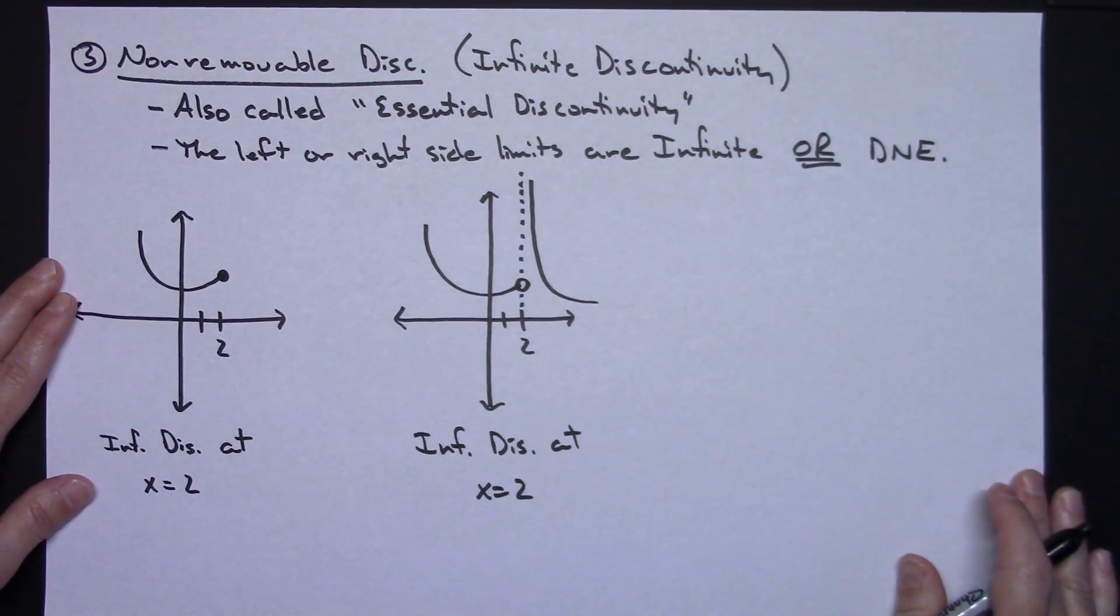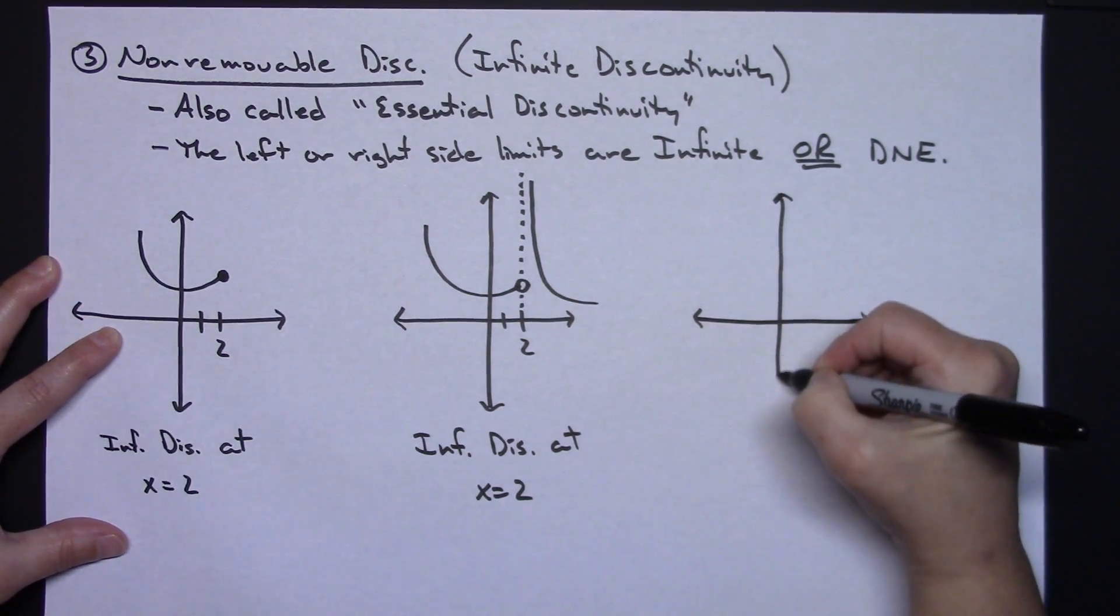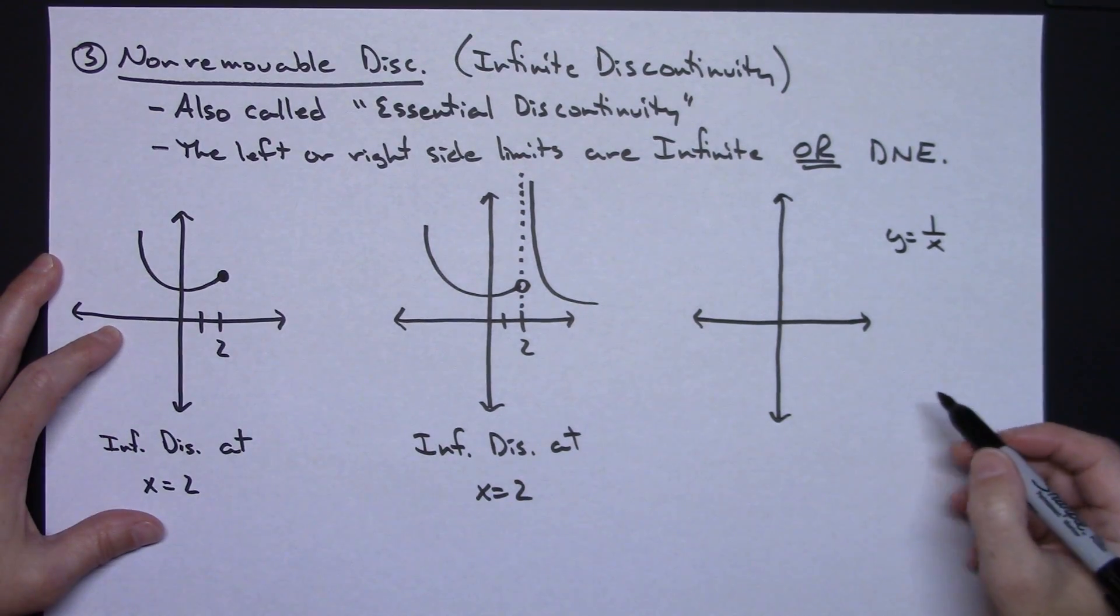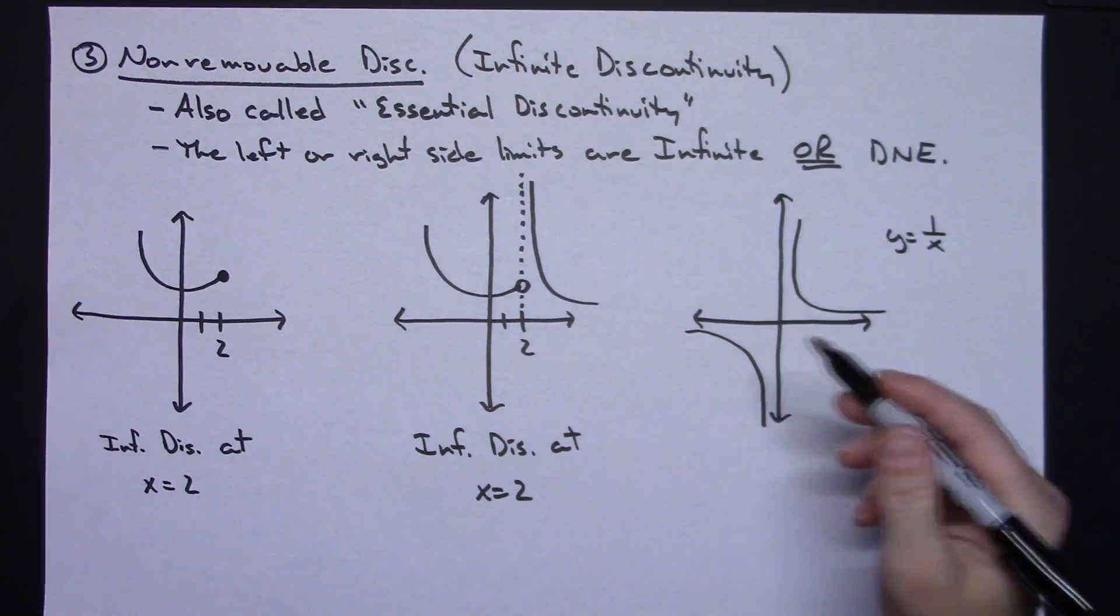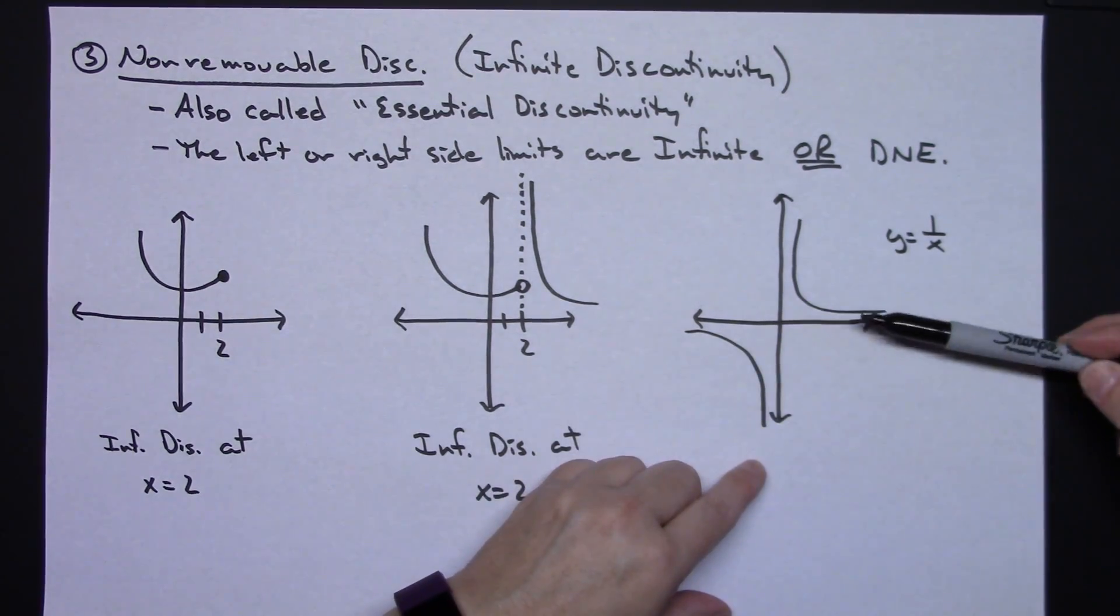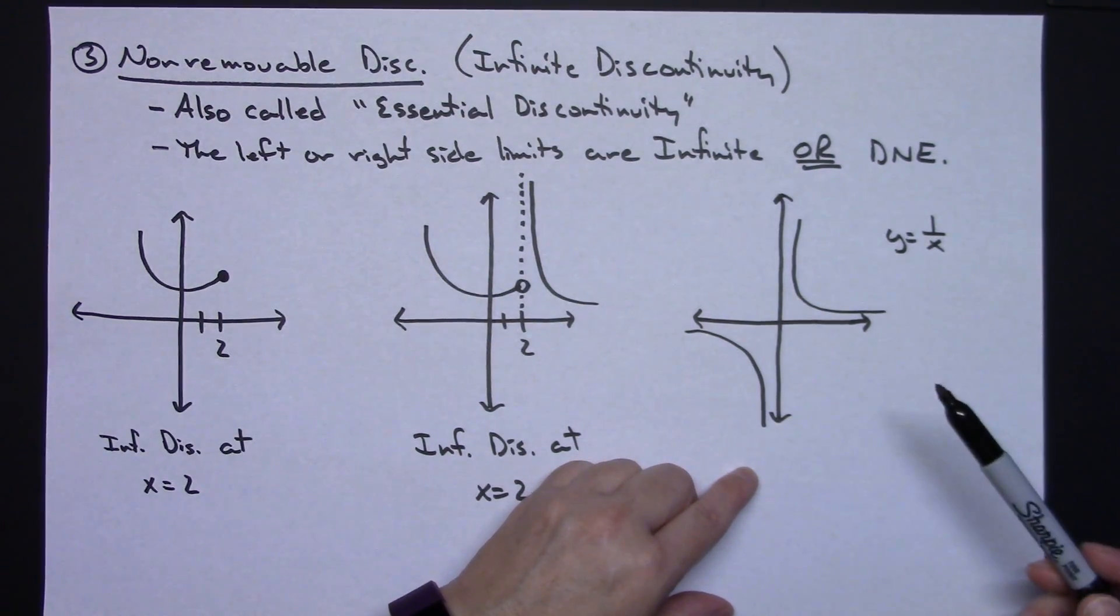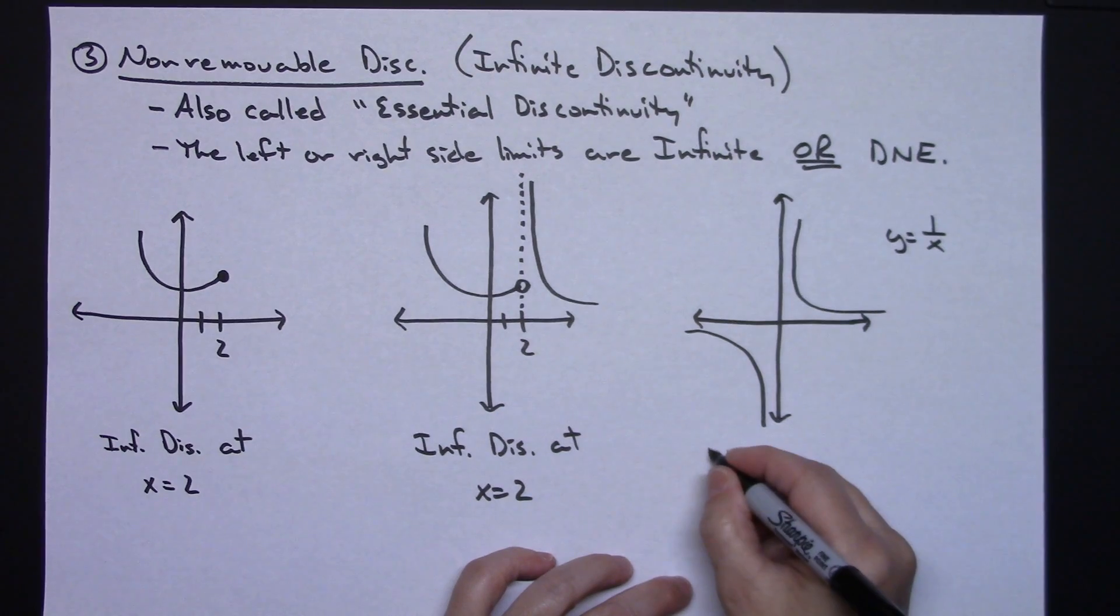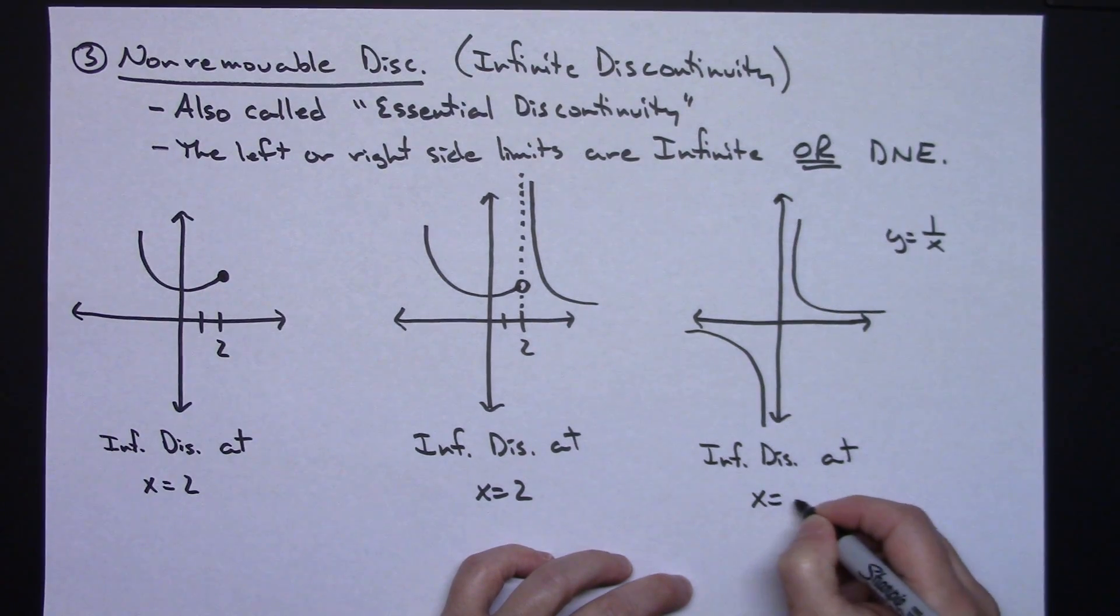Now probably one of the most common ones would either be like the graph of 1 over x or 1 over x squared. So like let's do the y equals 1 over x. As a rough sketch there, the graph of y equals 1 over x looks something like that. This is an infinite discontinuity as well, but this is occurring at 0. The limit from the right is positive infinity. The limit from the left as x approaches here is negative infinity. So both of them, 1 being infinity, 1 being positive infinity, that classifies this as an infinite discontinuity. This is an infinite discontinuity at x equals 0.